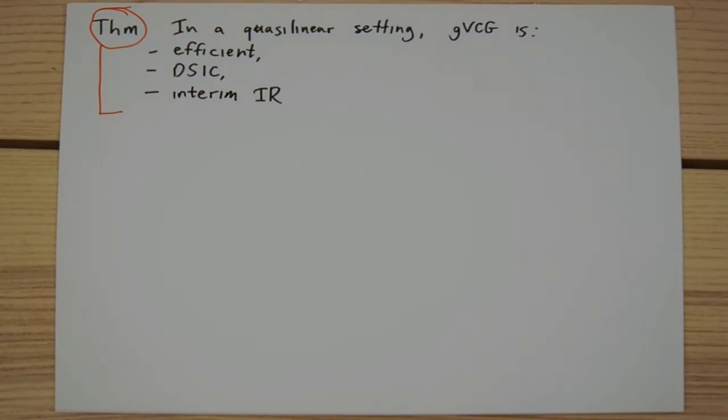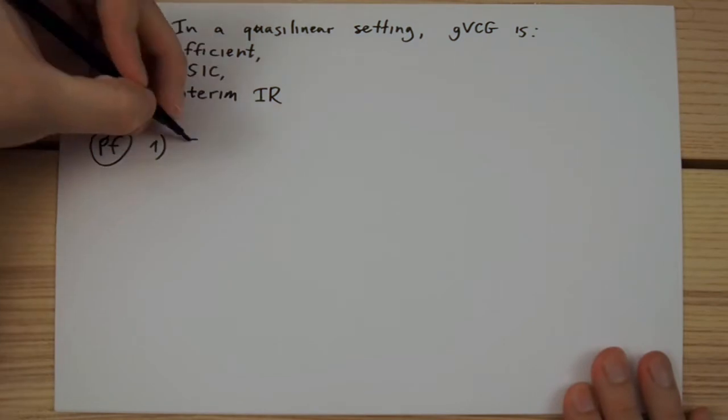The proof of incentive compatibility is not required, since we have shown earlier in the course that Groves' transfers implement the efficient allocation in dominant strategies. Since the generalized VCG transfer rule belongs to the class of Groves' transfers, that proof applies.